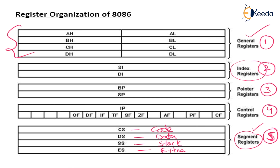Now we come to the last register: the flag register, also called the control register. In the next class we will discuss the flag register in detail — what it holds and an explanation of each flag. Until then, thank you.